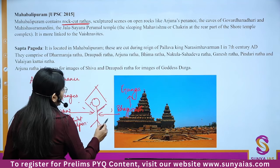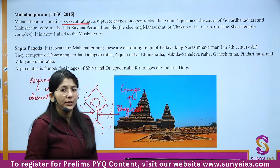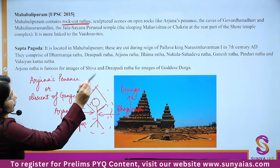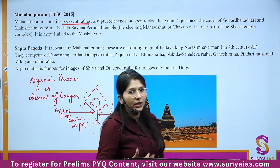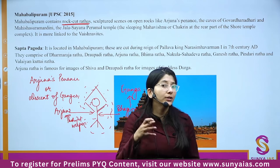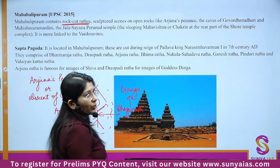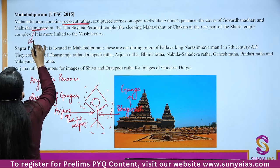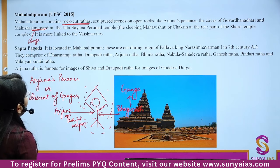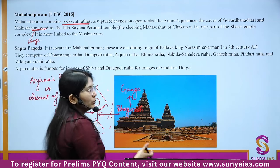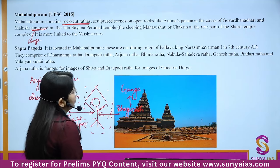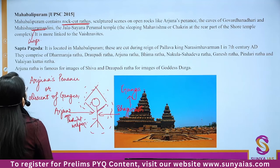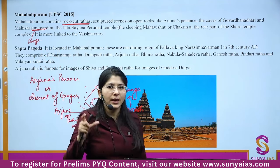Next: Chausath Yogini Temple at Morena. Statements: it's a circular temple built during the Kachchhapaghata dynasty; it's the only circular temple in India; it was meant to promote the Vaishnavite cult; its design inspired the Indian Parliament building. From the name 'Yogini,' it is related to the deity of Yoga, not Vaishnavism — so statement 3 is incorrect. 'Only circular' is a trigger word — be alert! It is not the only circular temple; there is also one at Jabalpur.